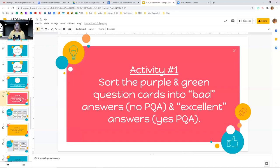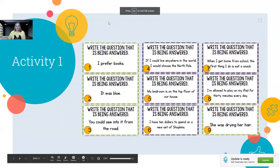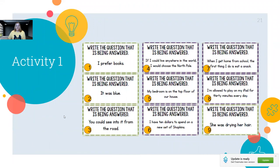We're going to do some activities. Activity number one — I'm going to put some cards on the board. Some of these are bad answers with no PQA, and some are excellent answers that have been PQA'd. In your language arts notebook, just jot down the numbers — not the whole words, just the number — of the ones you think are bad and which ones you think are excellent. So I'm going to put the sorting cards up. Read through these cards: the ones that have been PQA'd are going to be good answers. Write down the numbers that are yeses and the numbers that are nos. Pause the video to get down your yes and no answers.